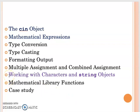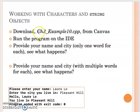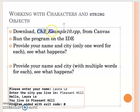This video we will talk about how to get the whole line from the user input and how to work with the character and string object. The first thing I want you to do is download chapter 3 example 10 and run your program from the IDE. This program will ask you for your name and where the city you live.